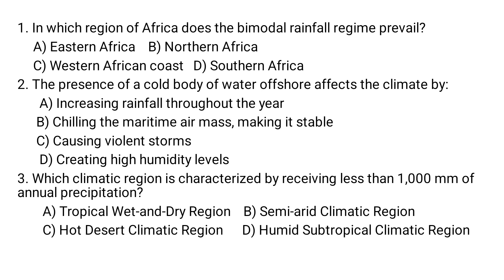Question number two: The presence of cold body of water offshore affects the climate by — A. Increasing rainfall throughout the year. B. Chilling the maritime air mass, making it stable. C. Causing violent storms. D. Creating high humidity levels.